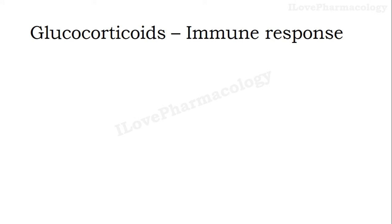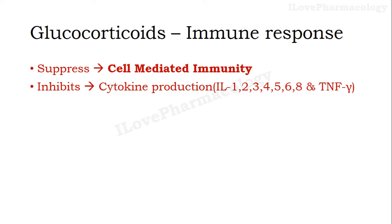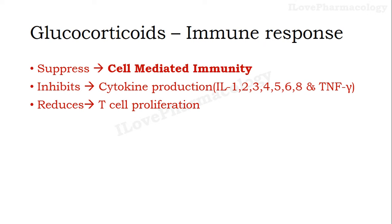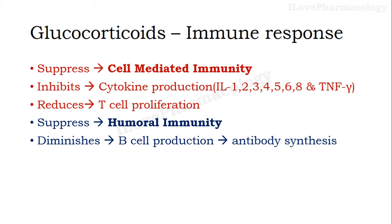Let's move on to glucocorticoid action on immune response. The immune response is made up of two types: T cell mediated response as well as the humoral response. Both responses will be suppressed — there will be suppression of cell mediated immunity because of inhibition of cytokine production and it will reduce T cell proliferation. At the same time it also suppresses humoral immunity, thereby diminishing both B cell production as well as antibody synthesis.